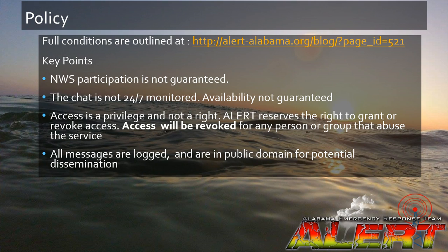In order to use the Skywarn Alert Spotter Chat there are a few rules and policies that must be followed. The full conditions are outlined on our website. Key points: National Weather Service participation is not guaranteed, and it's not guaranteed that a report will lead to a watch or warning. The chat room is not monitored 24/7 and server availability is not guaranteed. The server is located in Iowa at a university. Access is a privilege and not a right. Alert reserves the right to grant or revoke access, and access will be revoked for abuse. All messages are logged and may be sent to other people. There is no copyright on conversations had over this system.